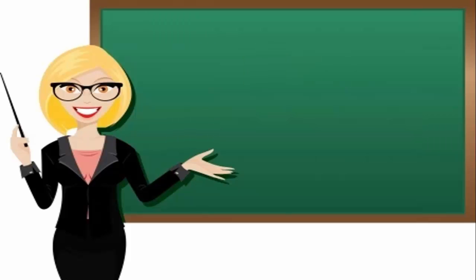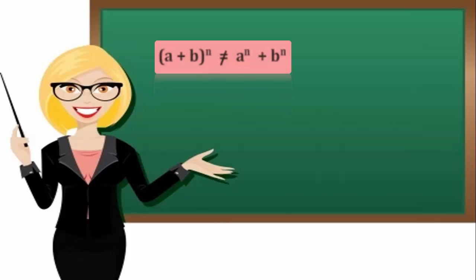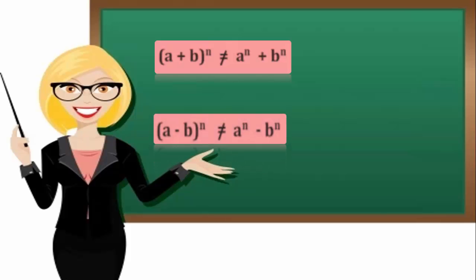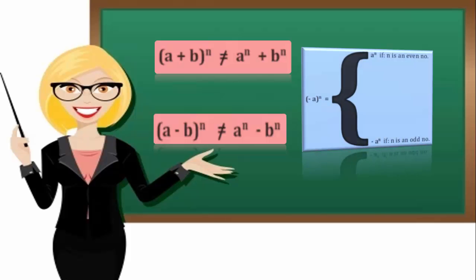Important rules: Number 1 — A plus B all to the power N does not equal A to the power N plus B to the power N. Number 2 — A minus B all to the power N does not equal A to the power N minus B to the power N. Also, negative A to the power N equals A to the power N if N is an even number, and equals negative A to the power N if N is an odd number.